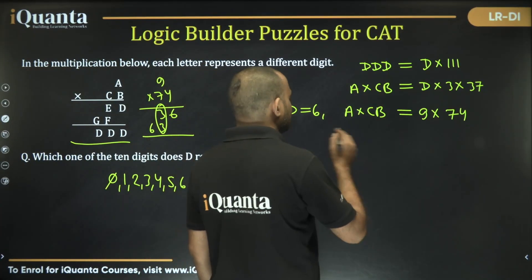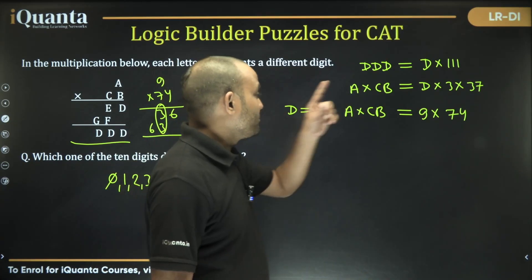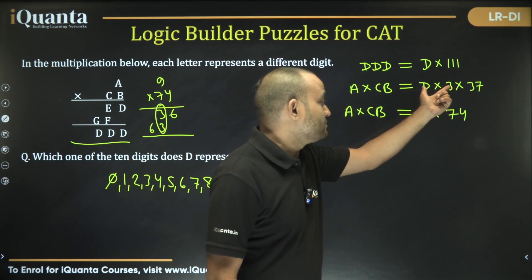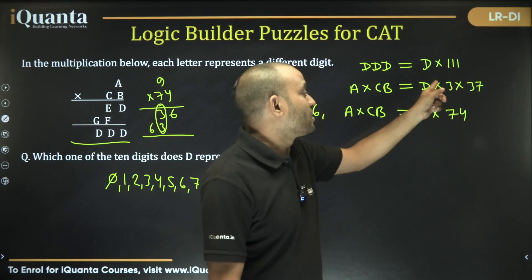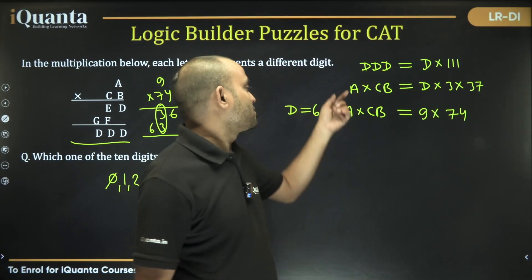Then apart from that, let's take the next number. Can I take D is equal to 5? No, I cannot take because if you take D is equal to 5, this will become 15 into 37 or 3 into 37 into 5, which don't give us this.